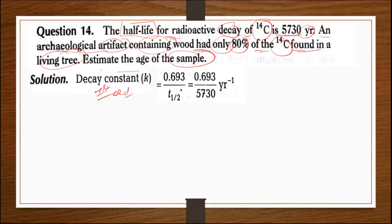Solution: Decay constant k = 0.693 / t½ = 0.693 / 5730 yr⁻¹. Radioactive decays follow first order kinetics.